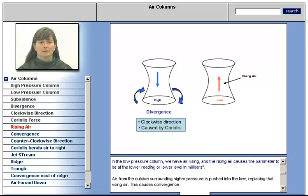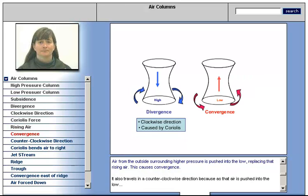In the low pressure column, we have air rising, and the rising air causes the barometer to be a lower reading, or lower level in millibars. Air from the outside surrounding higher pressure is pushed into the low, replacing that rising air. This causes convergence.